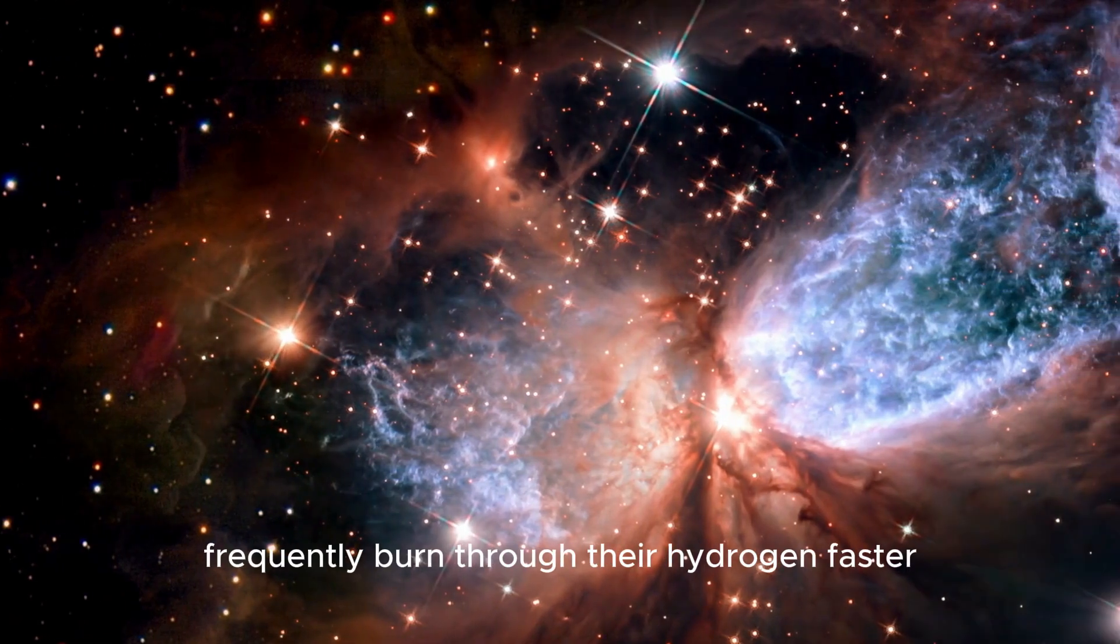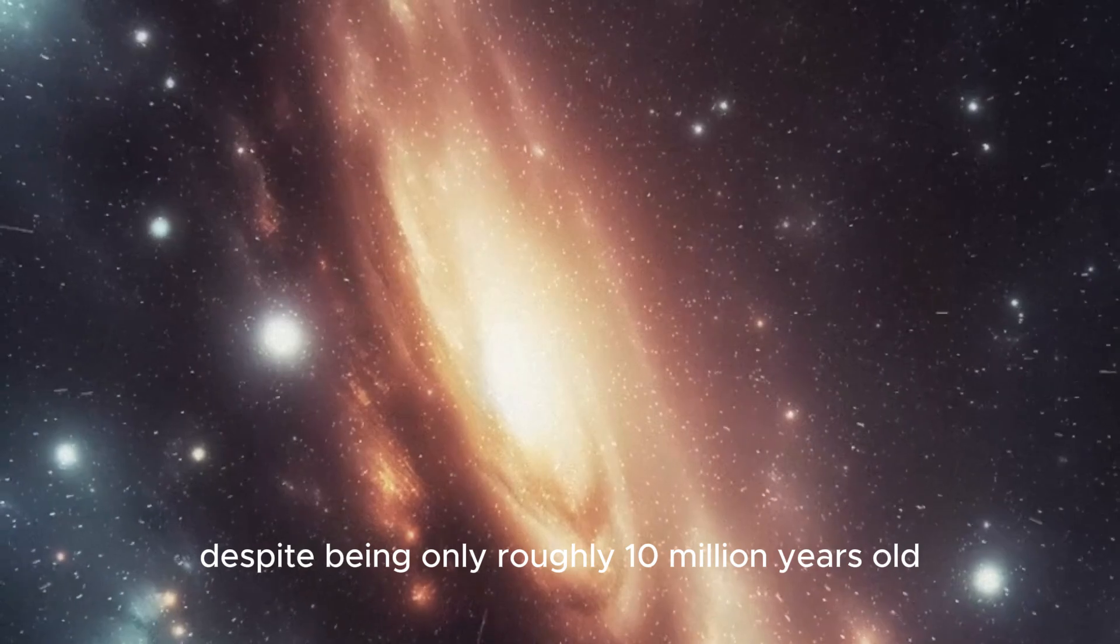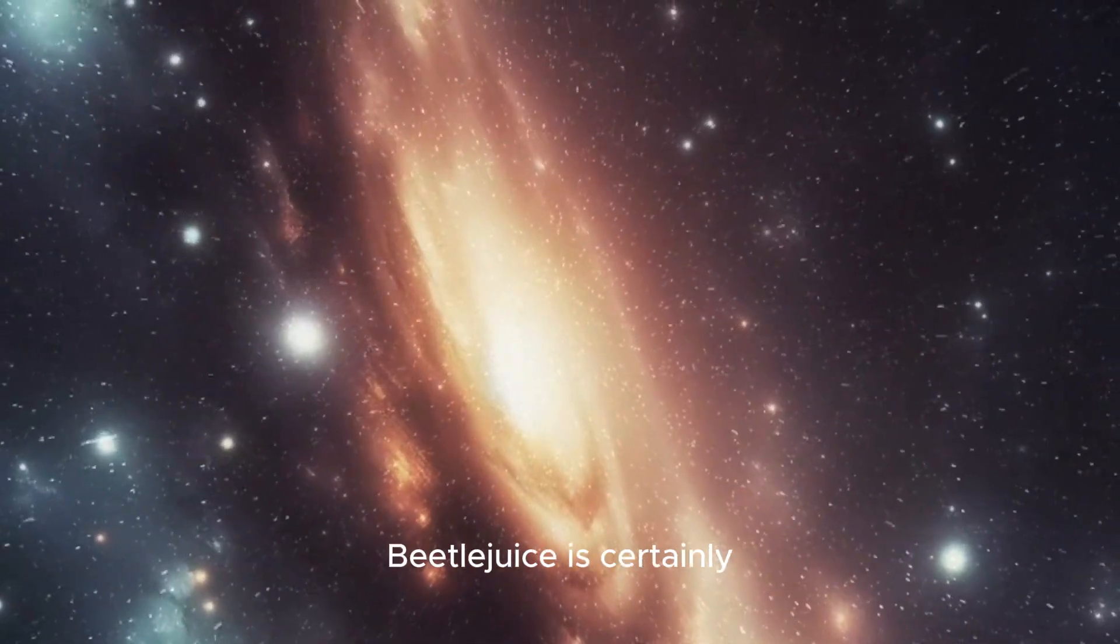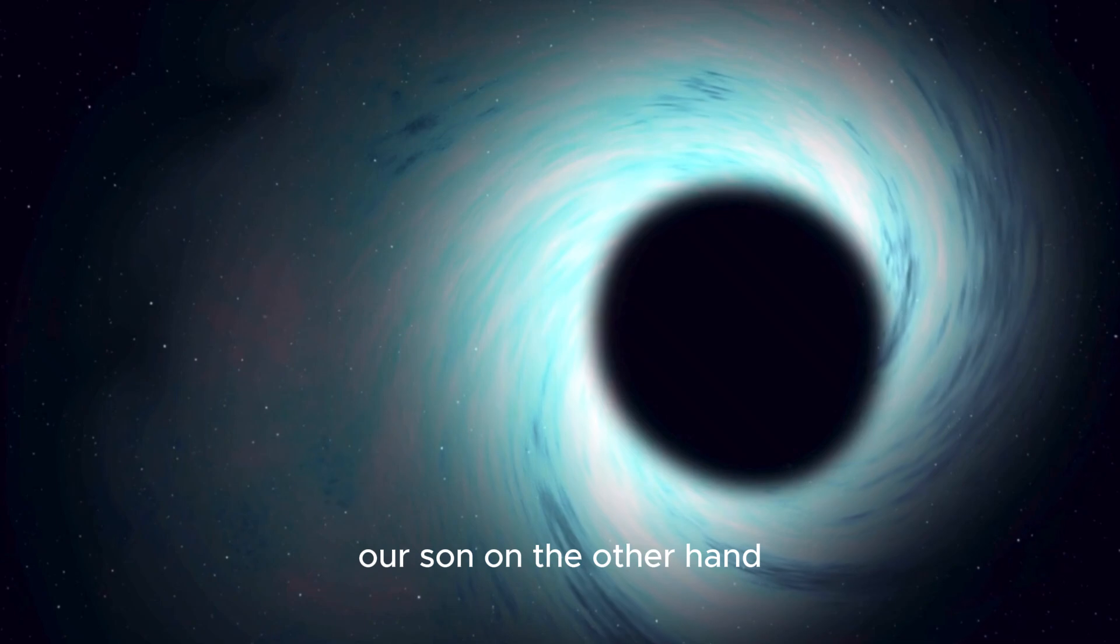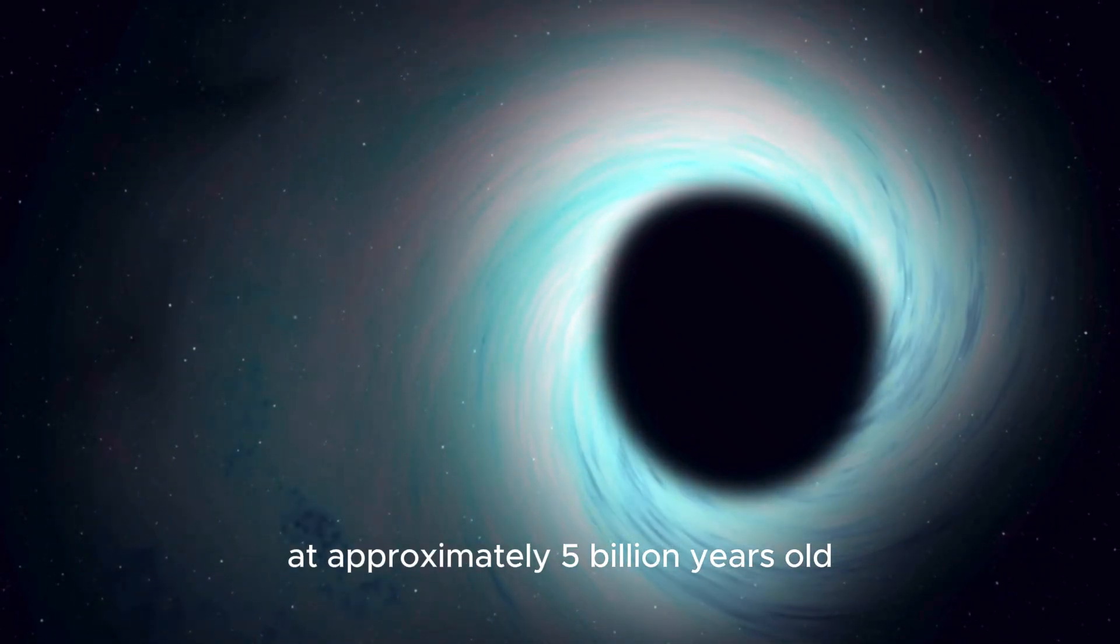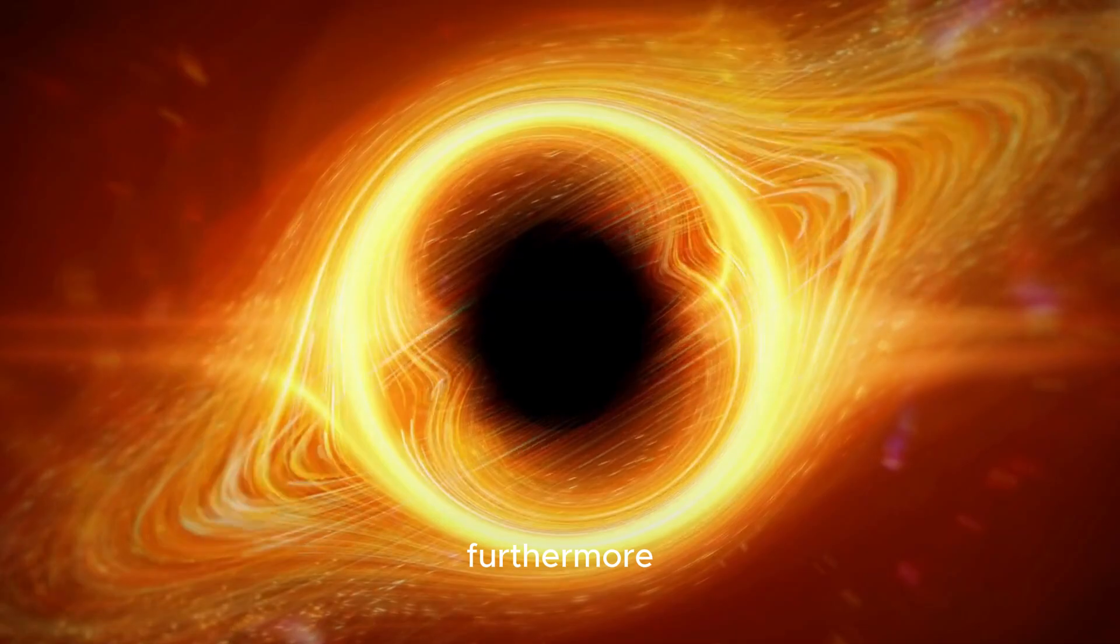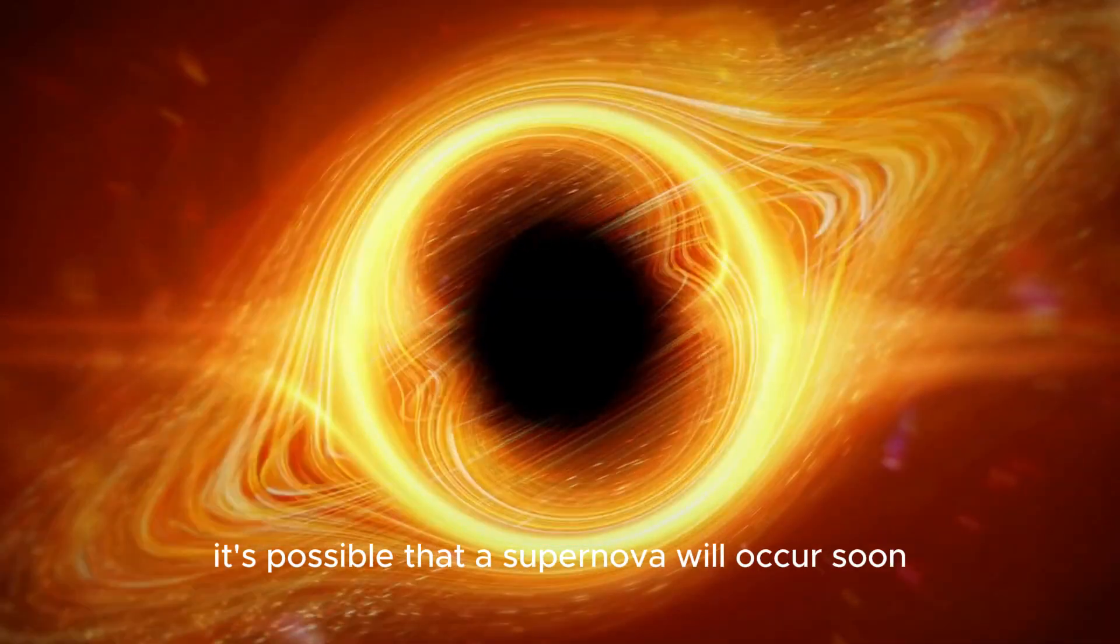Larger stars frequently burn through their hydrogen faster and die off sooner. Despite being only roughly 10 million years old, Betelgeuse is certainly nearing the end of its lifespan. Our sun, on the other hand, is still in its prime at approximately 5 billion years old. Furthermore, because Betelgeuse is nearing the end of its life, it's possible that a supernova will occur soon.